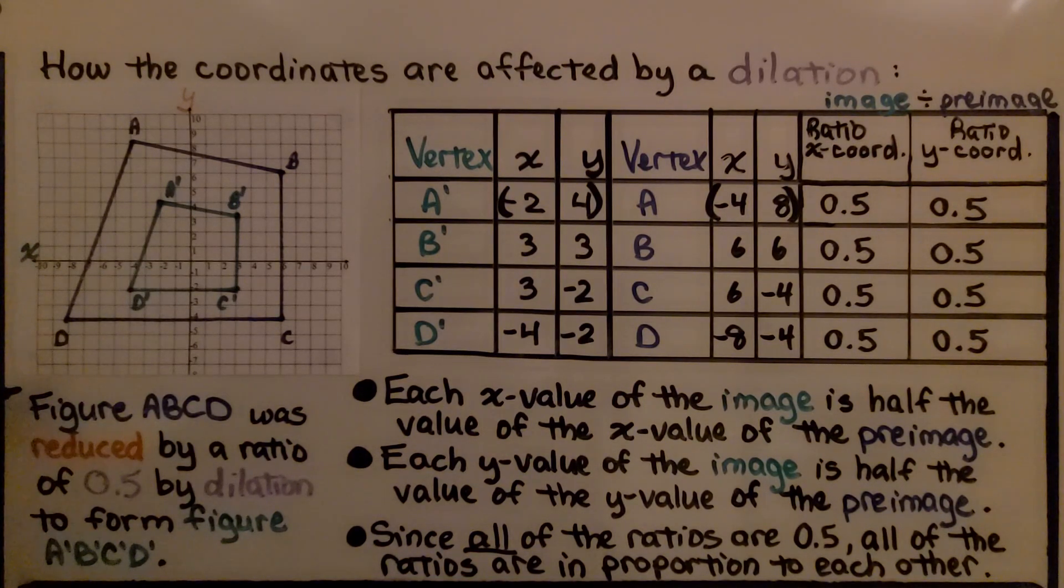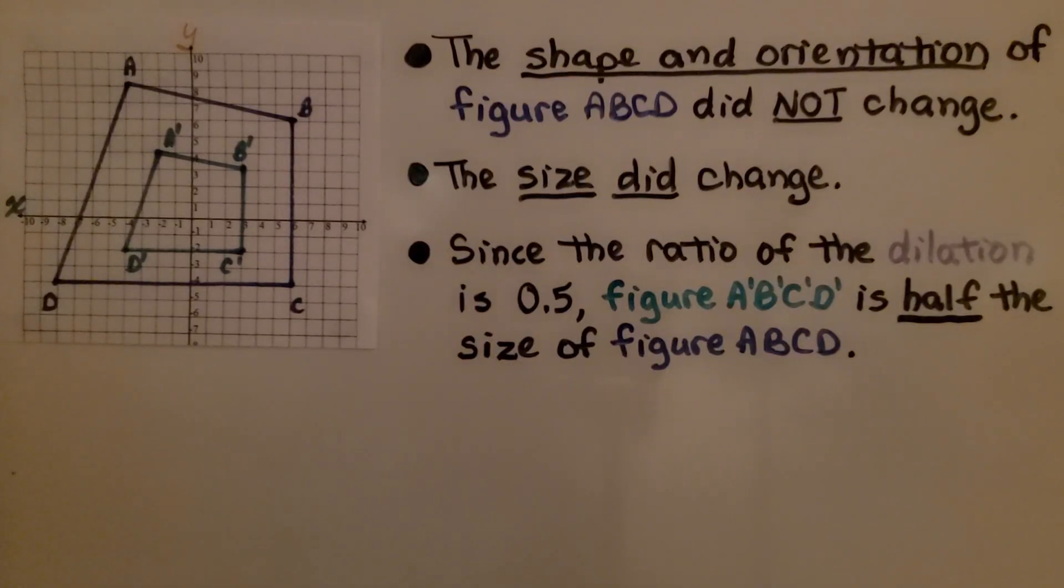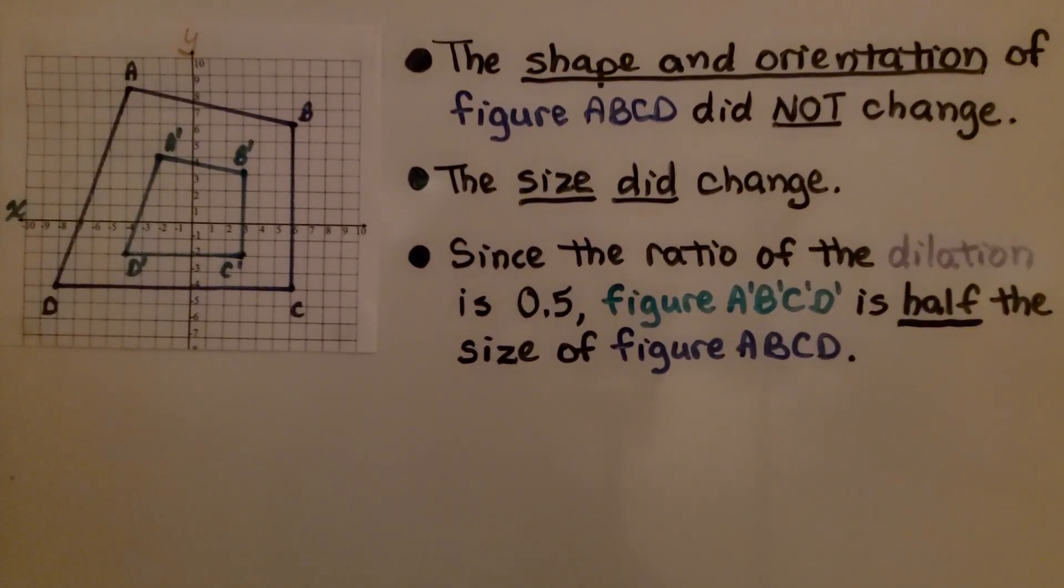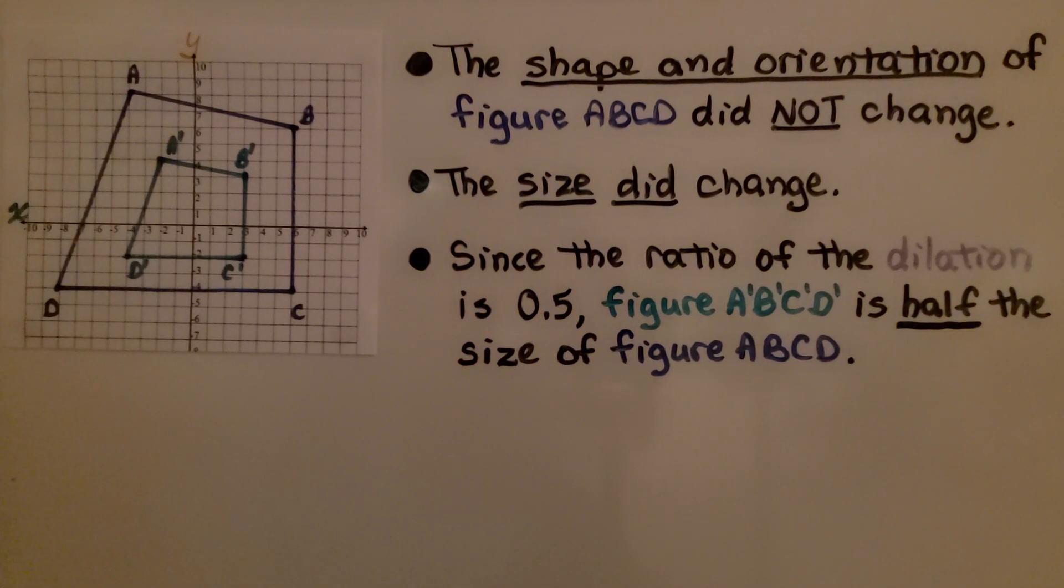So figure ABCD or quadrilateral ABCD was reduced. We can see the image is smaller. It was reduced by a ratio of 5 tenths by dilation to form figure A'B'C'D'. The shape and orientation of figure ABCD did not change. The size did change. And since the ratio of the dilation is 5 tenths, figure A'B'C'D' is half the size of figure ABCD.